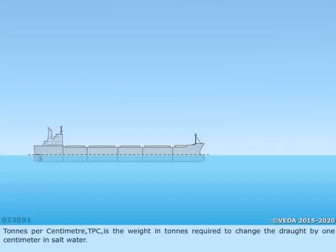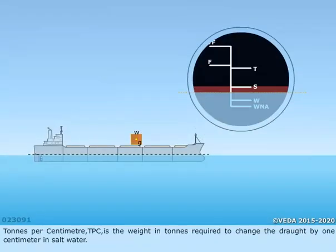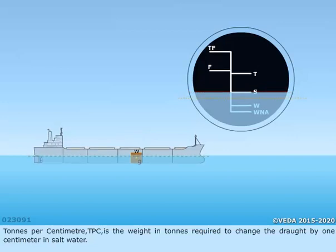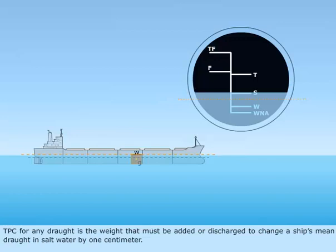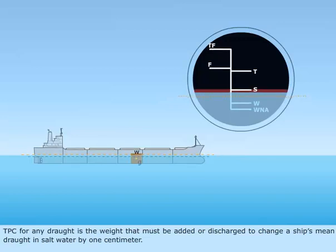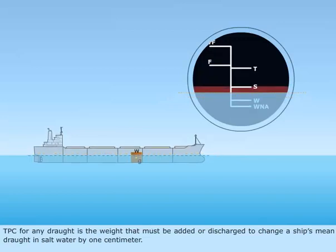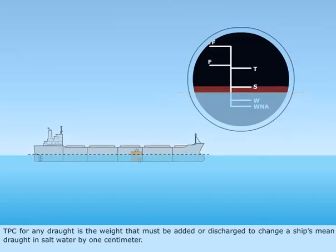Tons per centimeter, or TPC, is the weight in tons required to change the draft by 1 cm in saltwater. TPC for any draft is the weight that must be added or discharged to change a ship's mean draft in saltwater by 1 cm.